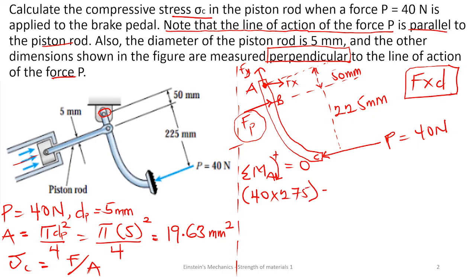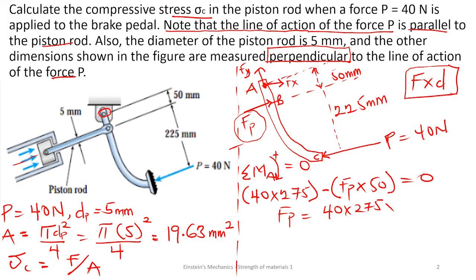Minus: when we look at Fp, which is the force in the piston, it is going anticlockwise about the point, and the perpendicular distance is 50. Setting this equal to zero and making Fp the subject, we get 40 times 275 divided by 50, which gives us a force of 220 Newtons.